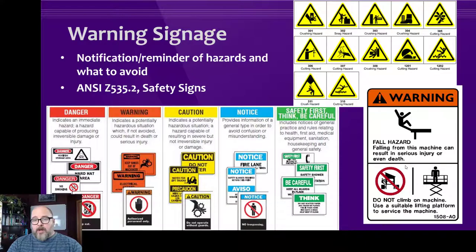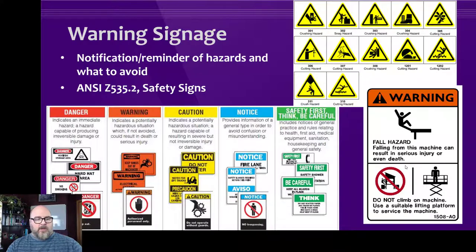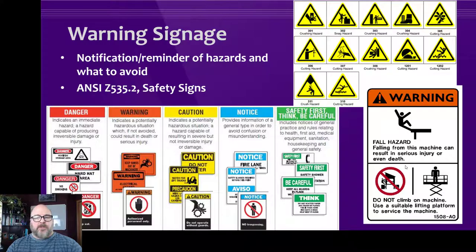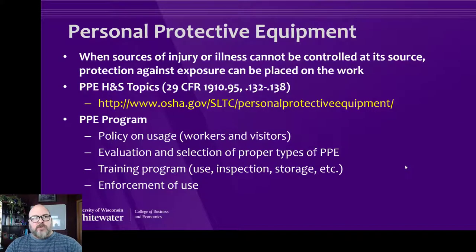Warning signage is actually a requirement. They've really moved toward pictograms, which are meant to show what the hazard is rather than putting it in words, since not everyone can read English. You can see the coloring system here: red is danger, orange is warning, yellow is caution, blue is notice, and green is just a general safety reminder. You can see different pictograms from crushing hazard to cutting hazard. Now that you know about them, you'll probably start noticing them out in the world.